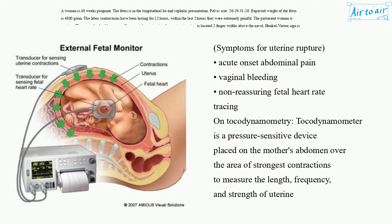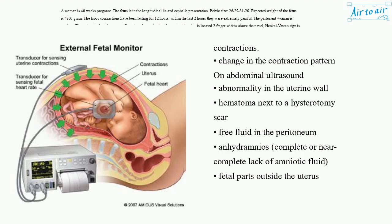Symptoms of uterine rupture include: acute onset abdominal pain; vaginal bleeding; non-reassuring fetal heart rate tracing on tocodynamometry. A tocodynamometer is a pressure-sensitive device placed on the mother's abdomen over the area of strongest contractions to measure the length, frequency, and strength of uterine contractions. Additional signs include: change in contraction pattern on abdominal ultrasound; abnormality in the uterine wall; hematoma next to a hysterotomy scar; free fluid in the peritoneum; anhydramnios (complete or near-complete lack of amniotic fluid); and fetal parts outside the uterus.